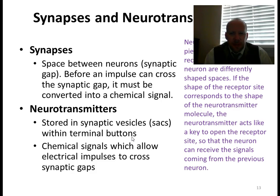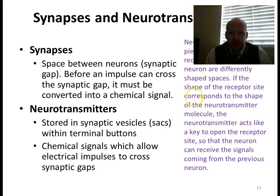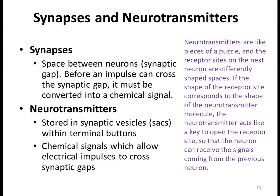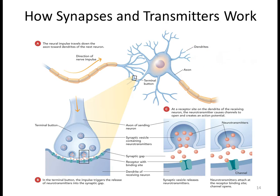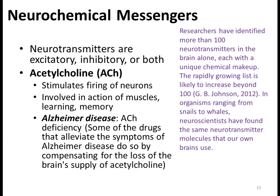Neurotransmitters are stored in synaptic vesicles within the terminal button, which allows communication to go from being electrical to becoming chemical. Looking at this close-up, you can see the different neurotransmitters floating, and they have to connect at the correct binding site or channel — it has to match up closely, otherwise it won't send another action potential.